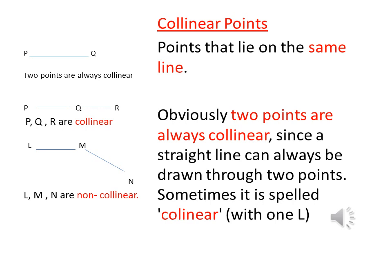For example, points P, Q, and R lie on the same straight line so they are collinear. We have another set, L, M, and N — they don't lie on the same line, so they are non-collinear points.